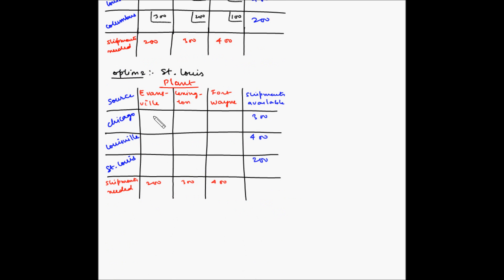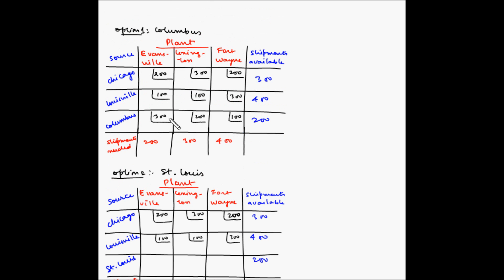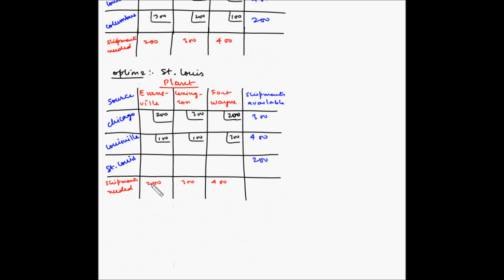For option number 2, the costs from Chicago and Louisville remain the same: Chicago to Evansville $200, to Lexington $300, to Fort Wayne $200; Louisville to Evansville $100, to Lexington $100, to Fort Wayne $300. The difference is for St. Louis: from St. Louis to Evansville $100, to Lexington $300, and to Fort Wayne $400.